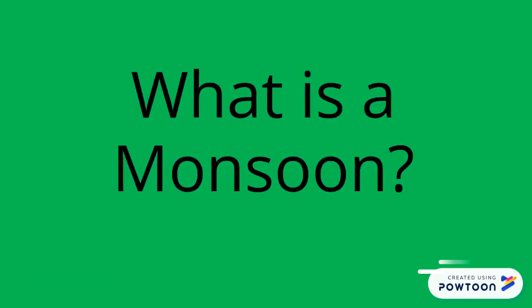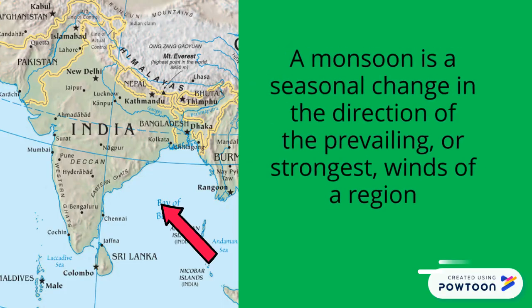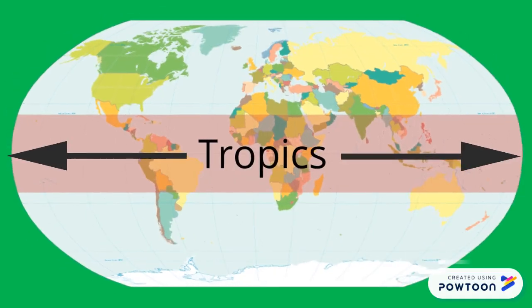Geography Minute. What is a monsoon? A monsoon is a seasonal change in the direction of the prevailing or strongest winds of a region. Monsoons cause wet and dry seasons throughout much of the tropics.